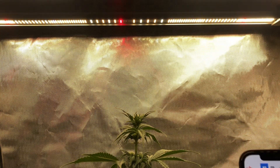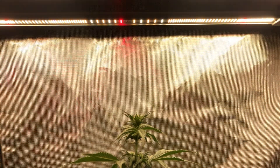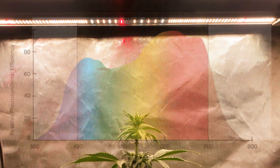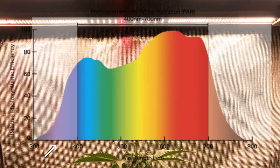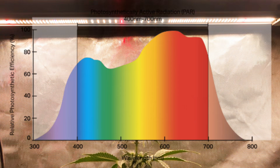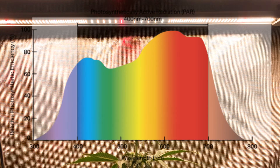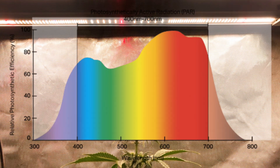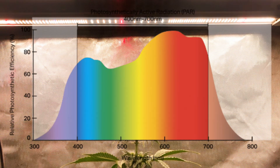Note that the PAR range does not cover ultraviolet or infrared light. And while these two wavelengths do not really help feed the plant, they do provide other benefits that we'll go over another time.